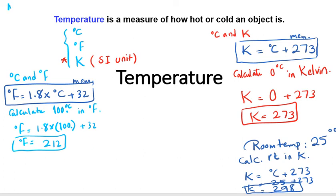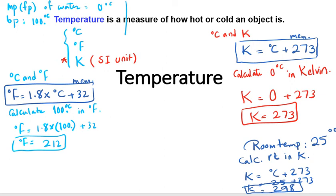One thing to memorize is that the boiling point of water is 100 degrees Celsius, or 212 degrees Fahrenheit, or 373 Kelvin. The same temperature is represented by different numbers in different scales.